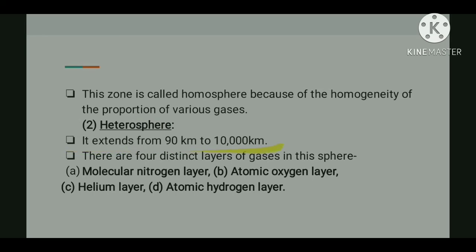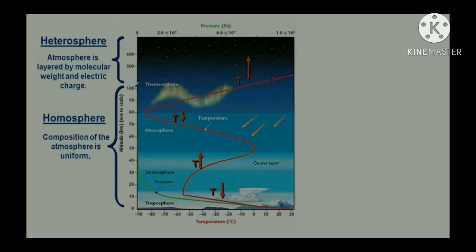The heterosphere extends from 90 kilometers to 10,000 kilometers. Different layers of this sphere vary in their chemical and physical properties. There are four layers of gases in the heterosphere: the molecular nitrogen layer, the atomic oxygen layer, the helium layer, and the atomic hydrogen layer.